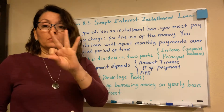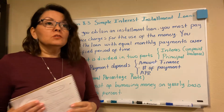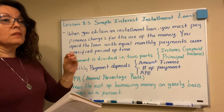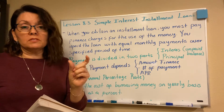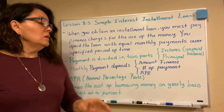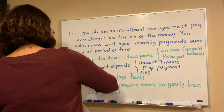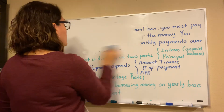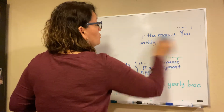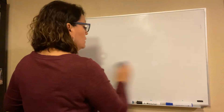The monthly payment depends on three things: the amount financed, the number of payments, and the APR. The APR is the annual percentage rate — it shows the cost of borrowing the money on a yearly basis, expressed as a percent. It comes from a table that we're going to use. I'm going to give you the numbers at the end, and you can also find the table in the book on page 413.